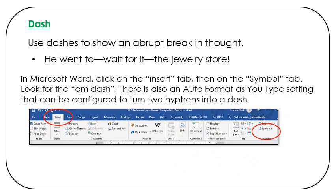In Microsoft Word, click on the Insert tab, then on the Symbol tab. Look for the EM dash. There is also an auto format as you type setting that can be configured to turn two hyphens into a dash.